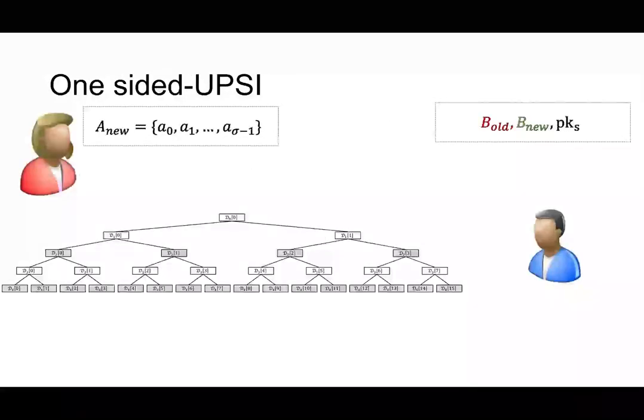Now consider a query. Alice has a_new here. And consider element a_i. If the hash is zero one one zero, we can trace through from the root to the leaf. So there are log n different bins. And if a_i is actually in the B set, the a_i must be in one of these bins.